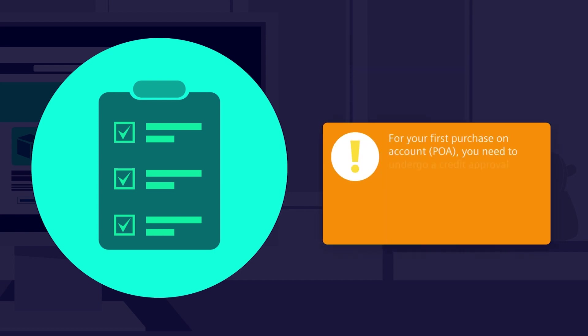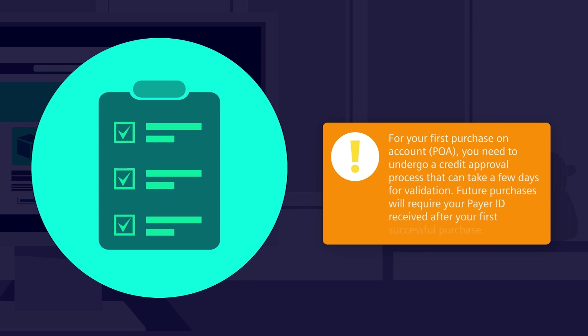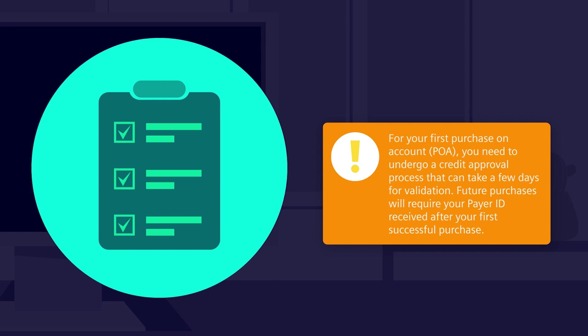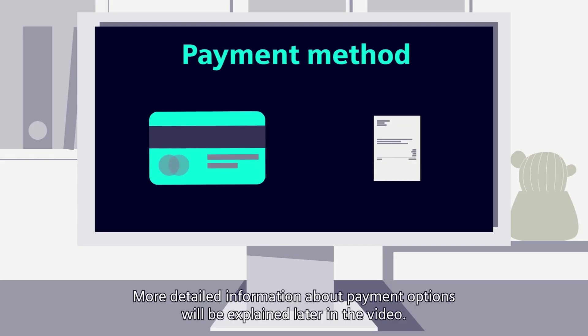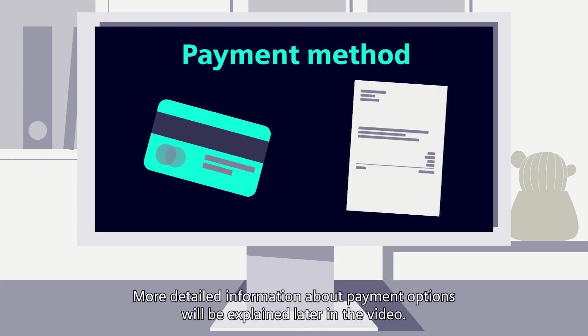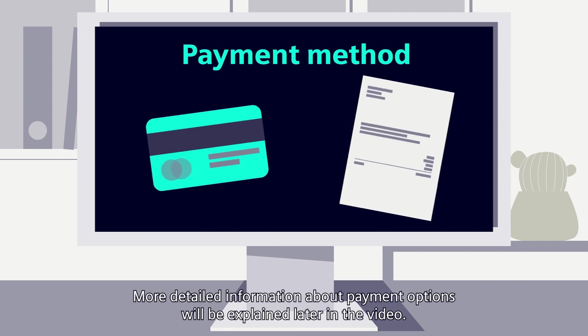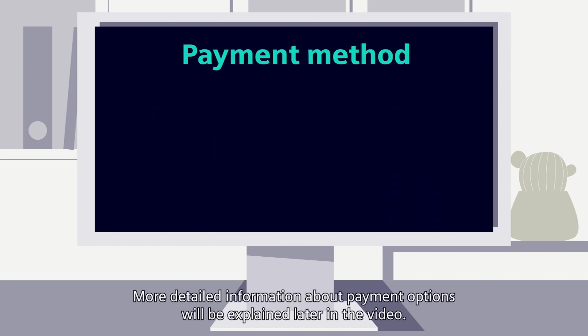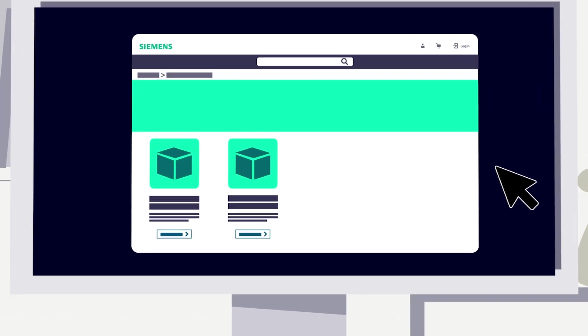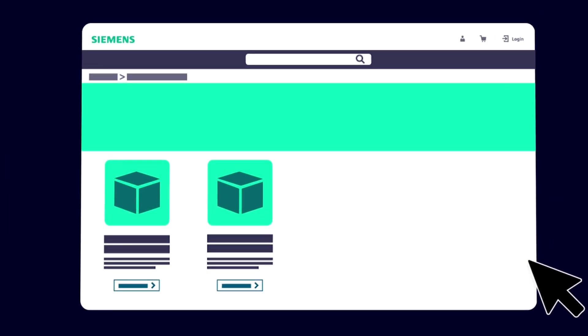For your first purchase on account (POA), you need to undergo a credit approval process that can take a few days for validation. Future purchases will require your Payer ID, received after your first successful purchase. More detailed information about payment options will be explained later in the video.